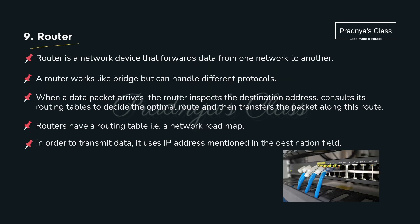The next network device is router. It is just like a bridge but it can handle different protocols, where data is shared from one network to another and the networks can be of different types.